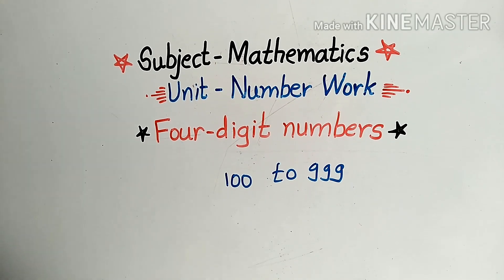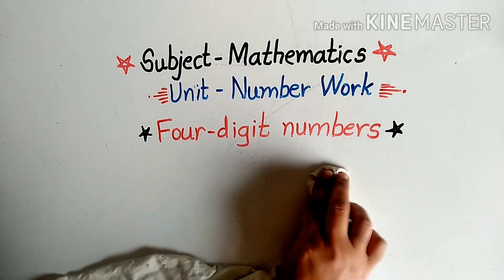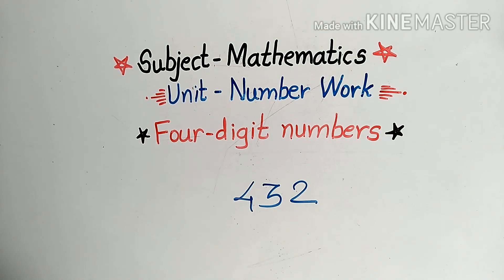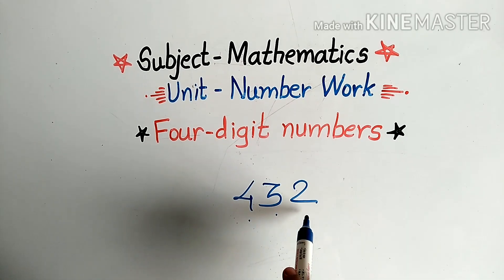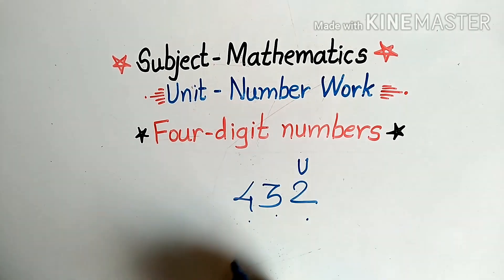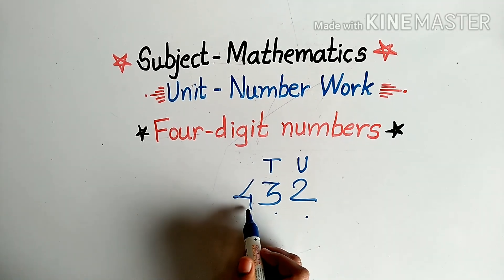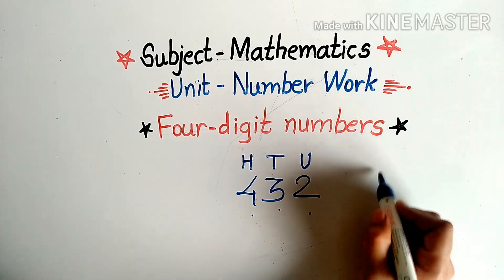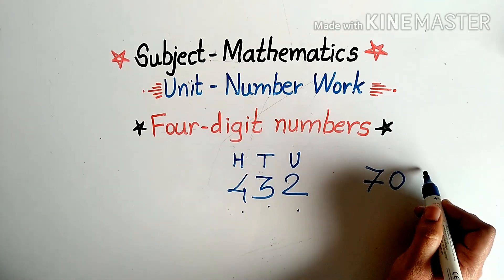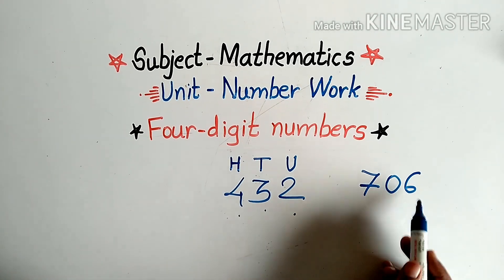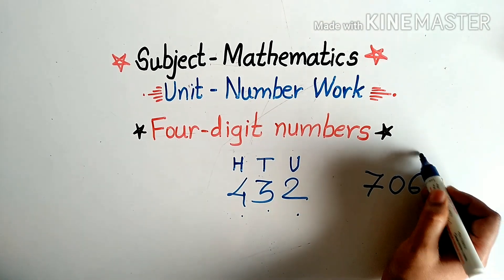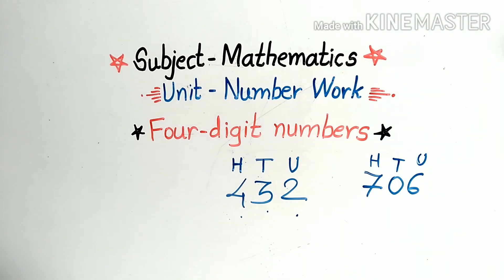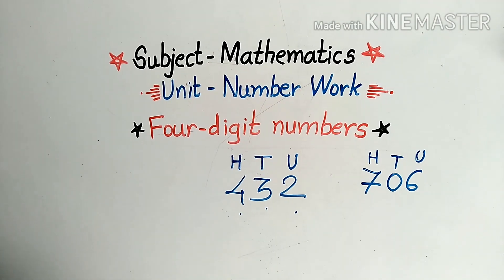First, I will revise three-digit numbers. Let's read some three-digit numbers. For example, what is this number? Four hundred and thirty-two. Here 2 is the units, 3 is the tens, and 4 is the hundreds. Let's take another number: seven hundred and six. This is also a three-digit number. Here 6 is units, 0 is tens, and 7 is hundreds. We learned all these three-digit numbers in the third standard.